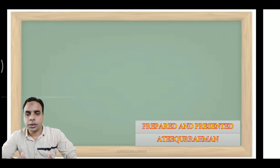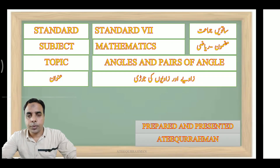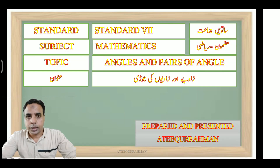Bismillahirrahmanirrahim. I very welcome you students to today's VTC MCGM online class. In this session today we are going to learn about angles and pairs of angles — zawiyya aur zawiyya ki jodhiyaan. Last session mein humne aapko bataya tha ke zawiyya ke androon aur bairun — the interior and exterior of an angle — aur adjacent angles ke baare mein maalumat haasil ki thi.